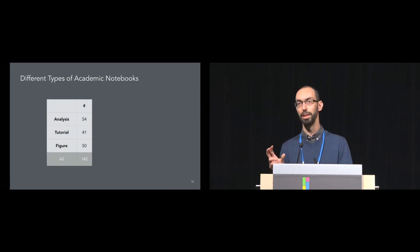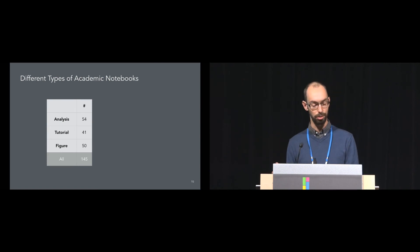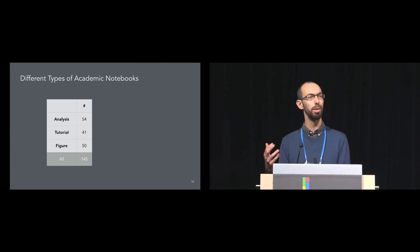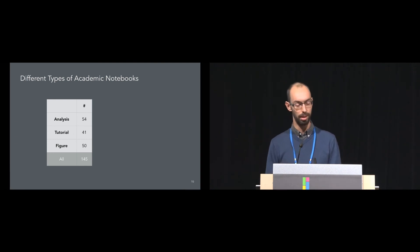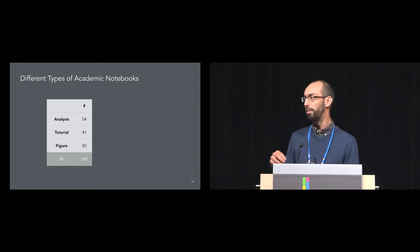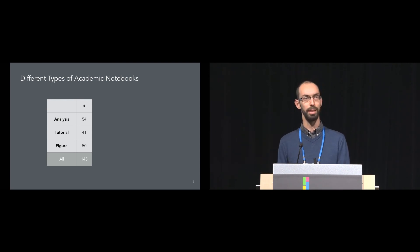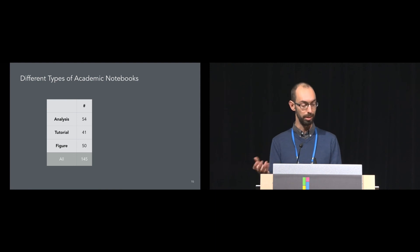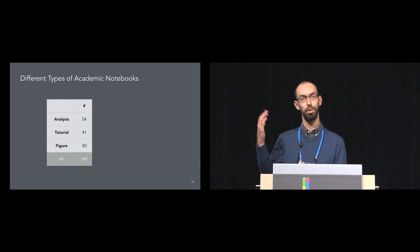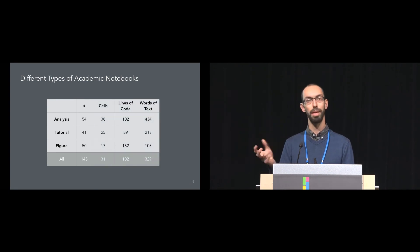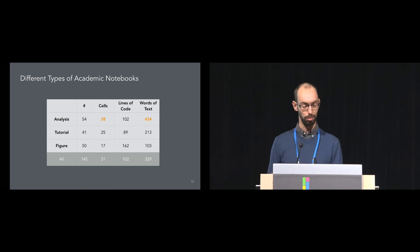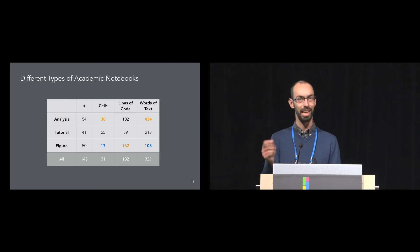Not all of these notebooks were achieving the same purpose. We saw at least three distinct uses. First, 54 "full analysis" notebooks showing the entire analysis process from getting data, cleaning it, all the modeling to final discussion of results. Second, 41 tutorial notebooks, which rather than showing the full analysis would show an example of a model type or how to use a specific Python library. Finally, 50 figure notebooks that wouldn't show the full analysis but just showed clean data and how to produce a figure. Analysis notebooks had the most cells and words of text, while figure notebooks had the least text but the most code.